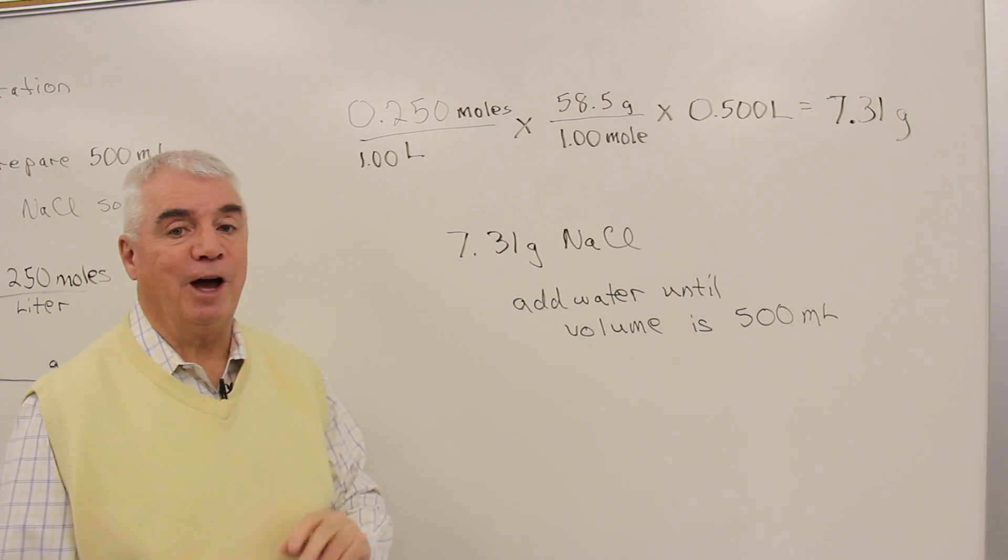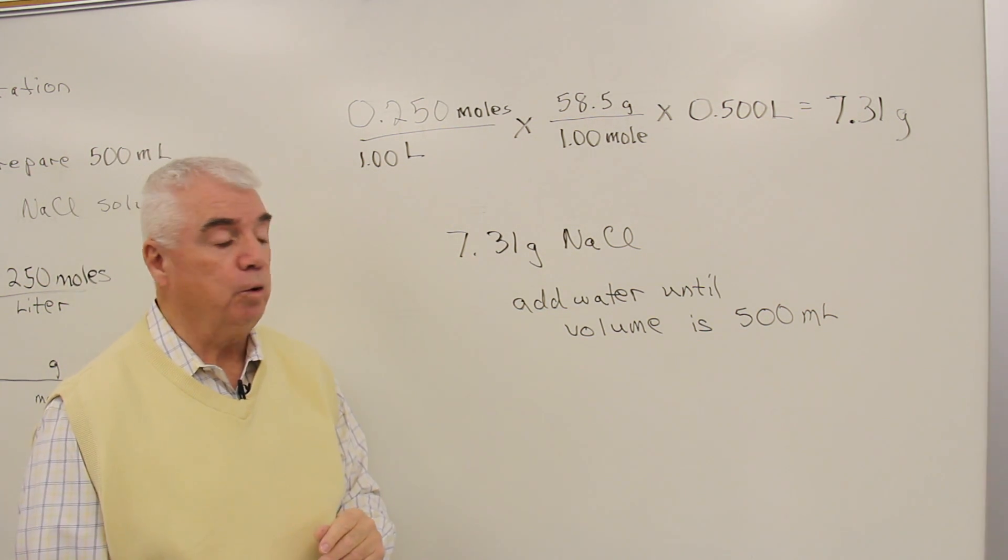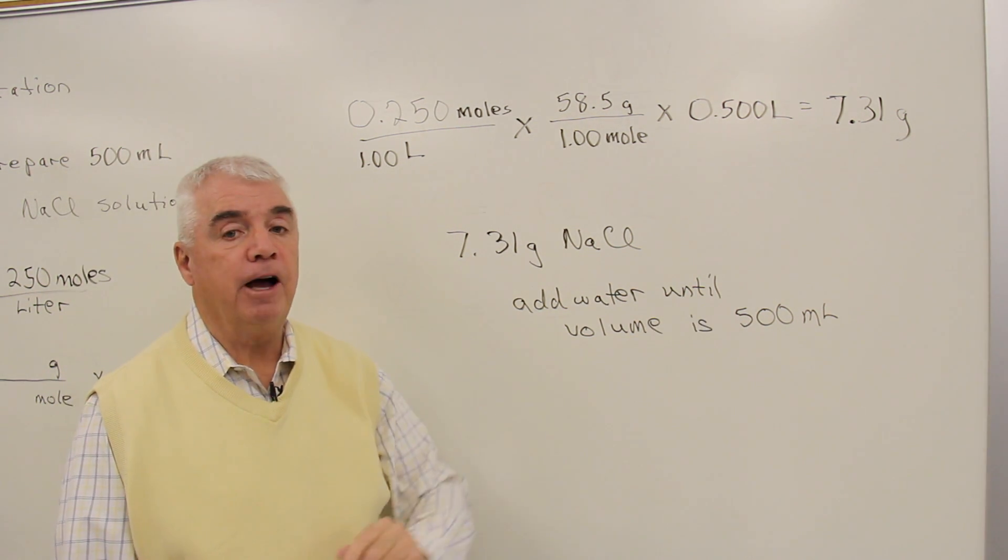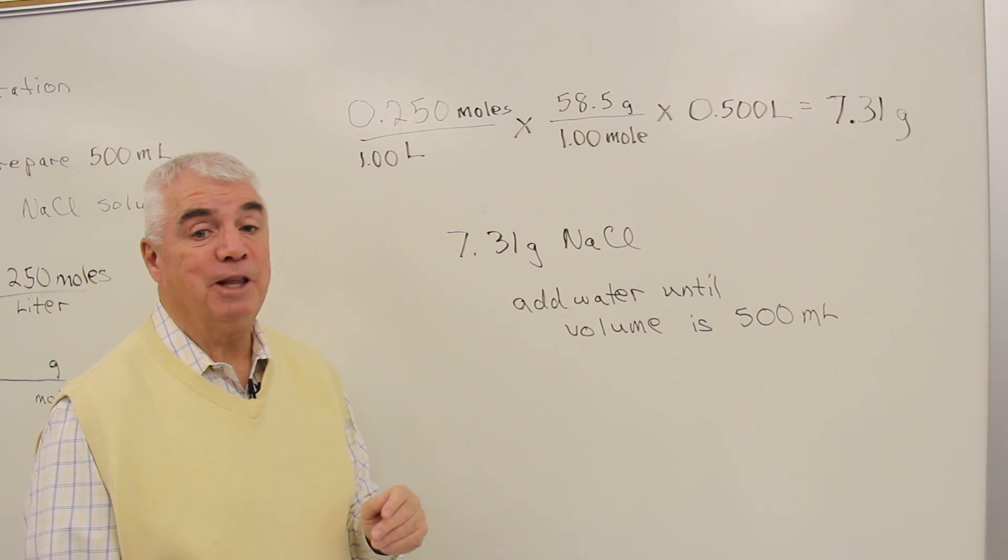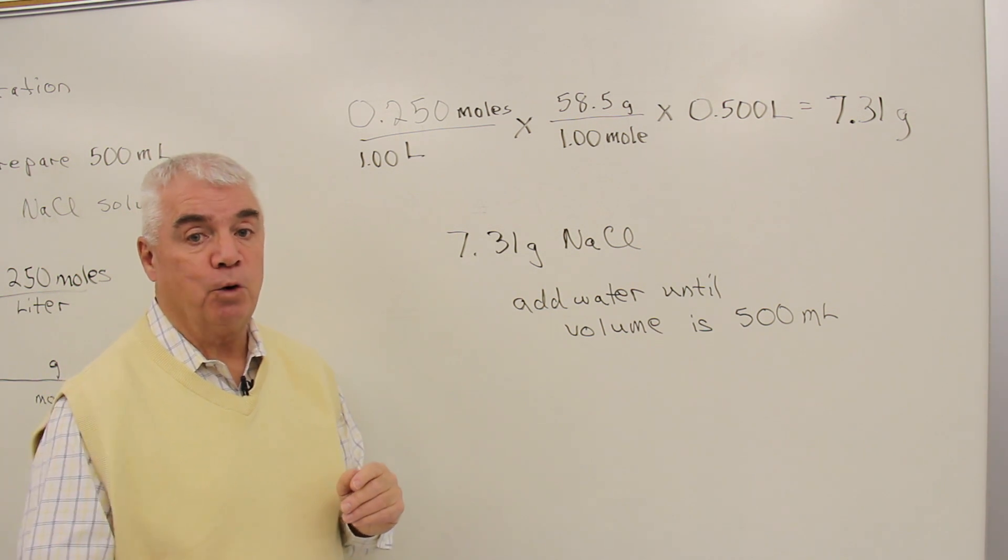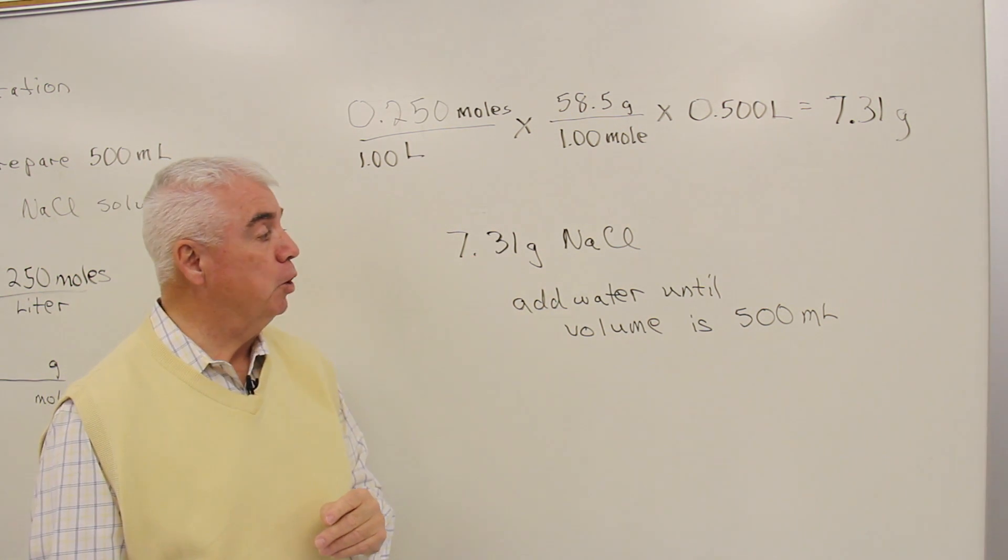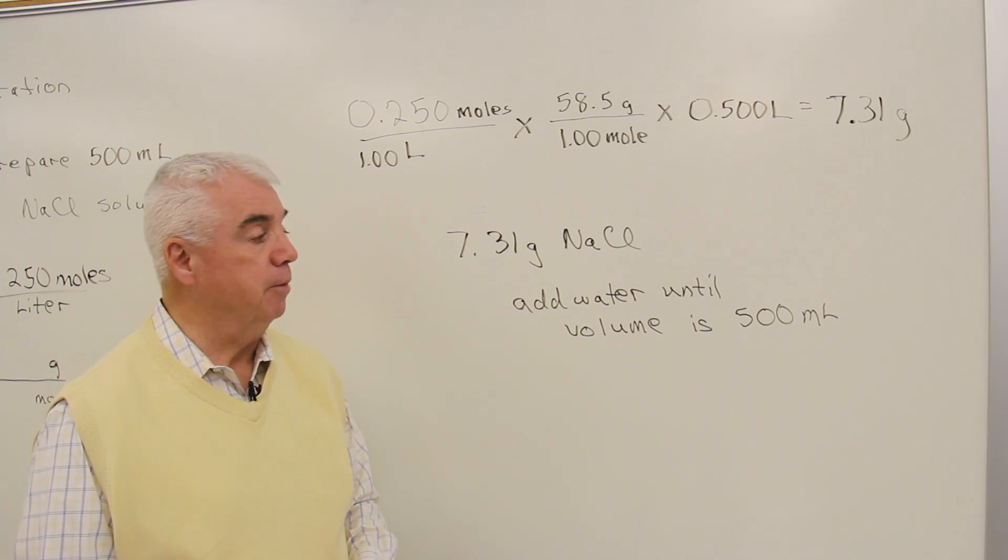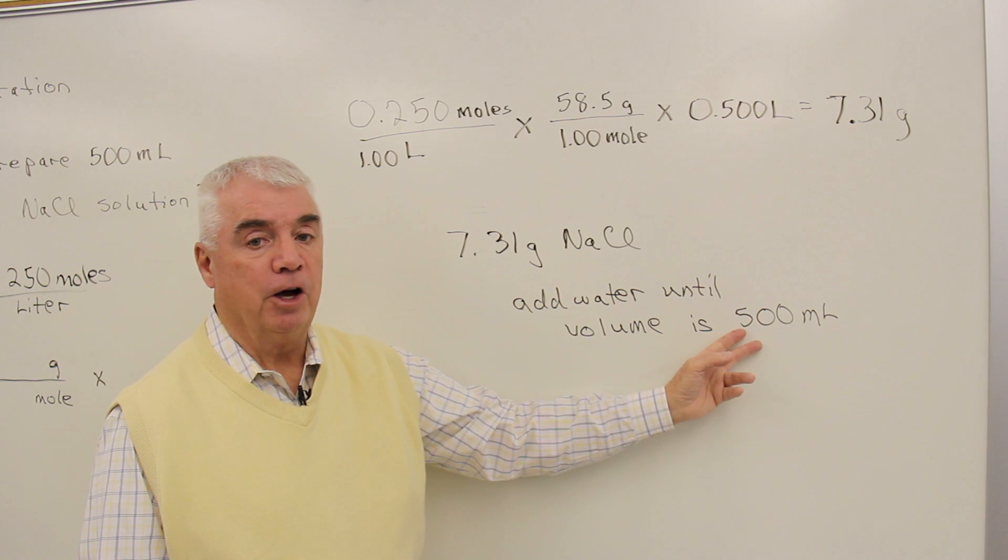An incorrect way of making that solution would be to take this amount of sodium chloride and add 500 milliliters of water to it. Why would that be wrong? What we'd have more than 500 in total volume at that point, because the sodium chloride is going to take up a certain volume. So we always dilute until we reach the final volume.